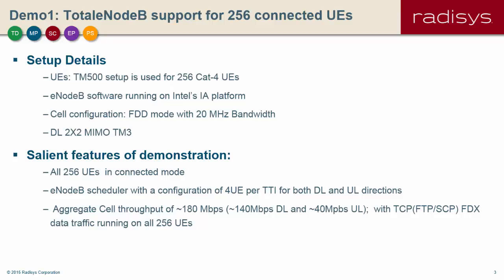We have support of 2x2 MIMO in downlink and transmission mode supported is TM3. All 256 users attached to E-Node-B are active all the time. They'll be doing full duplex TCP data transmissions. The E-Node-B scheduler is configured with 4 users per TTI, where it is going to schedule 4 users for each uplink and downlink subframe.